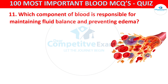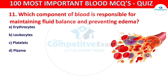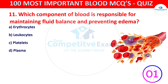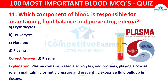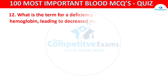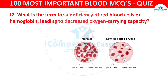Your options are erythrocytes, leukocytes, platelets, or plasma. The correct answer is D, that is plasma. Plasma contains water, electrolytes, and proteins, playing a crucial role in maintaining osmotic pressure and preventing excessive fluid buildup in tissues. Question number twelve: what is the term for deficiency of red blood cells or hemoglobin leading to decreased oxygen carrying capacity?